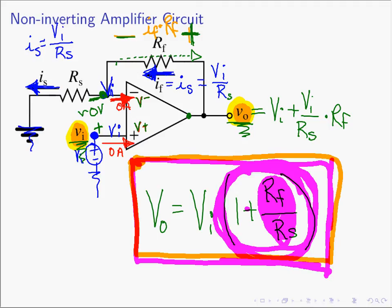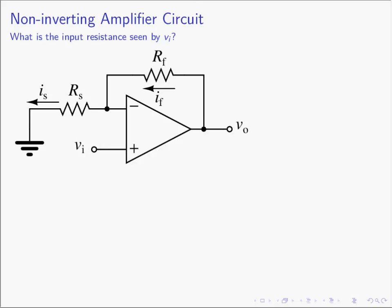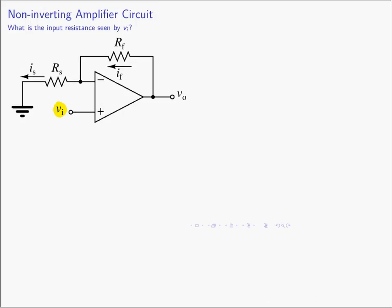Let's look at the non-inverting amplifier circuit a little bit more before we go on — specifically the question of what is the input resistance seen by the input. This VN voltage source is connected to our non-inverting amplifier circuit. What is the resistance that the voltage source VI sees? RN is simply going to be VN divided by whatever current IN flows, and the ratio of those two will be simply the input resistance.